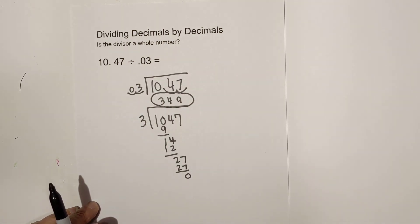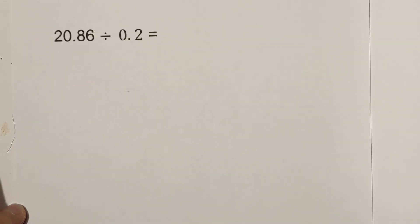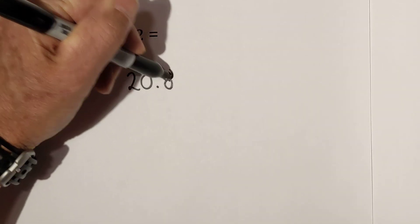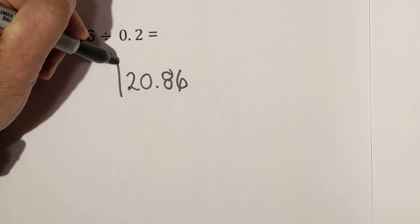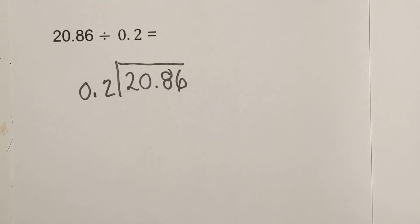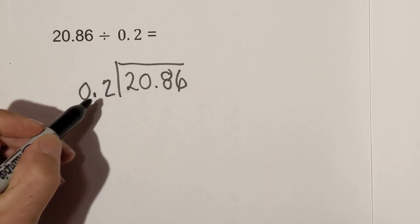Let's work another example. In this problem, we have 20 and 86 hundredths divided by 2 tenths. So let's rewrite it. And here's your divisor, 0.2. And remember, we ask ourselves this question, is the divisor a whole number? No, it is not.